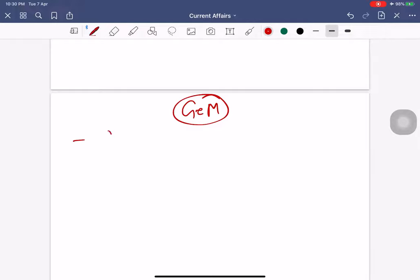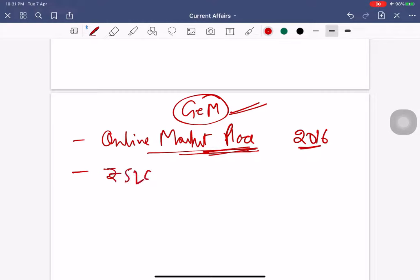Next is Government e-Marketplace, or GeM. It is an online marketplace that was launched in 2016 to ensure that the public procurement of goods and services done in India worth more than rupees 5 lakh crore annually is carried out through online platform. It increases transparency, efficiency, and reduces corruption.